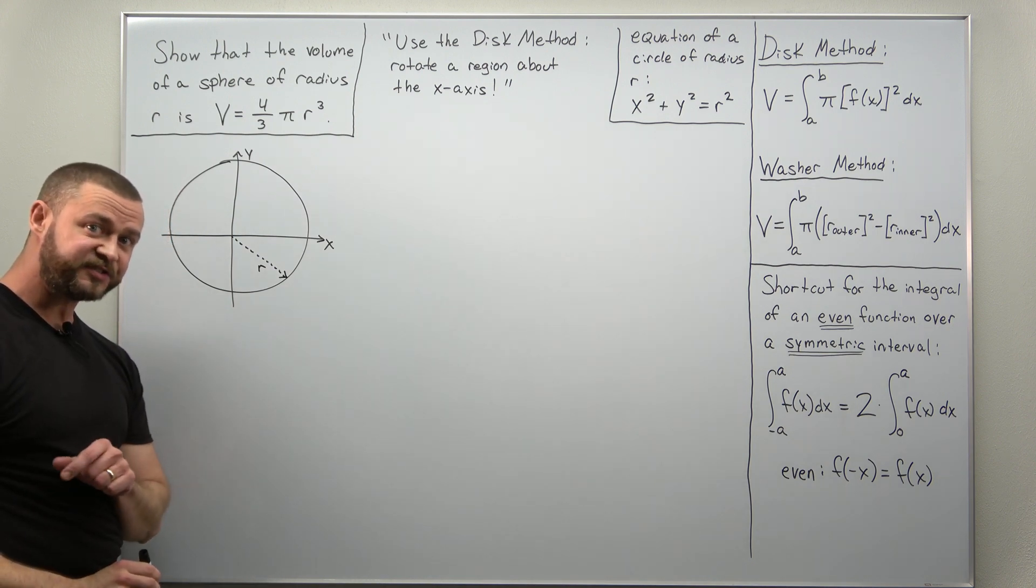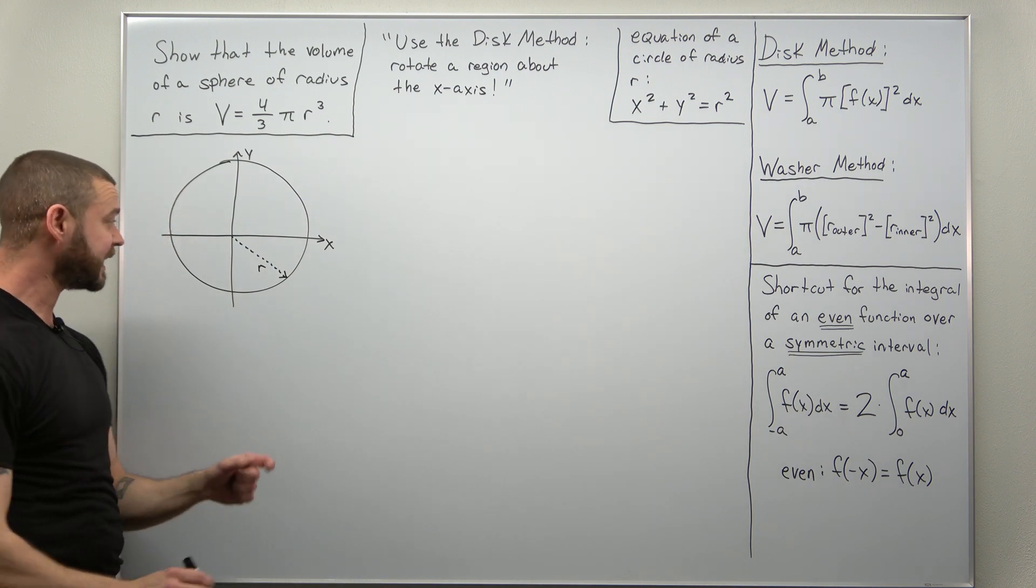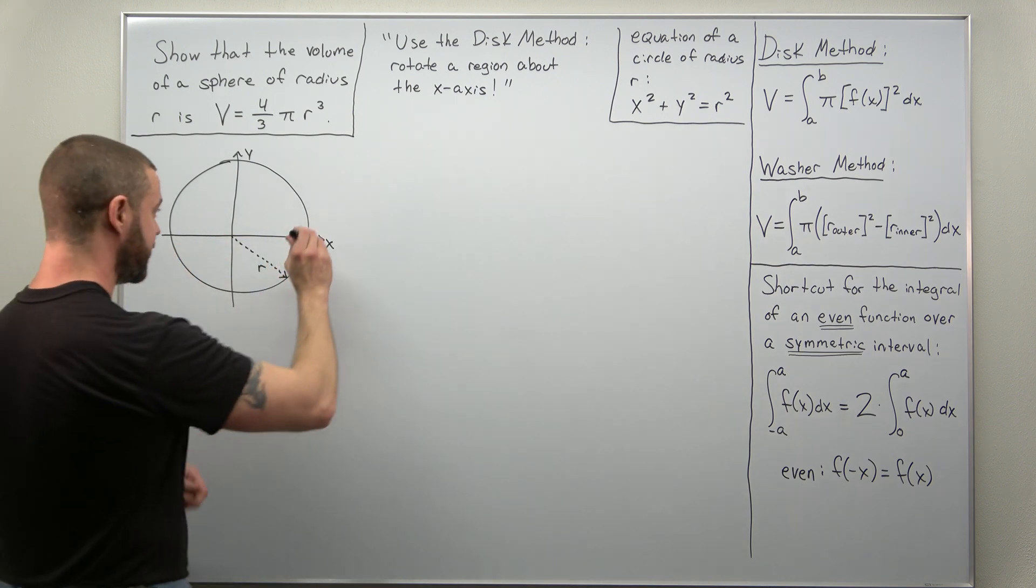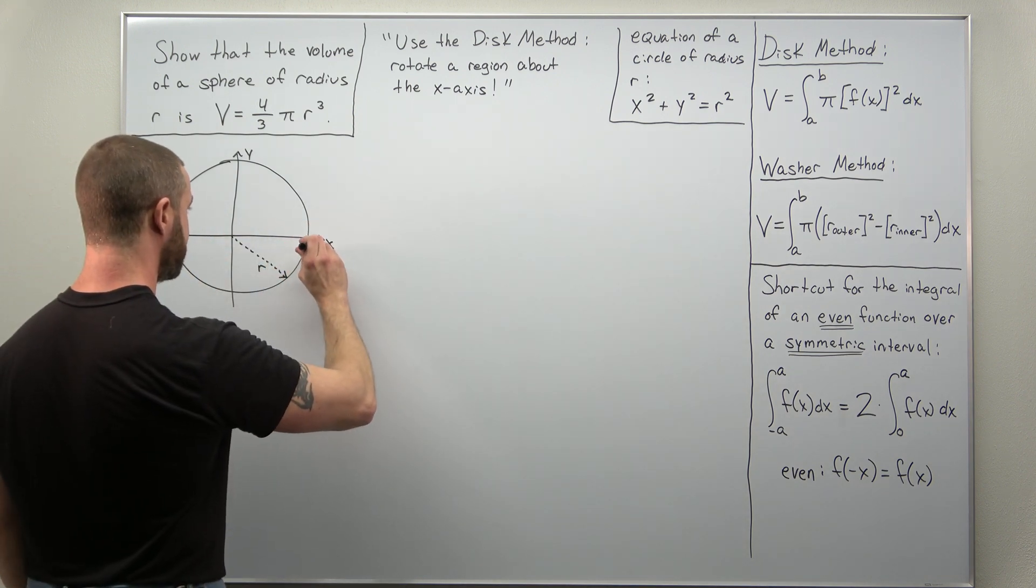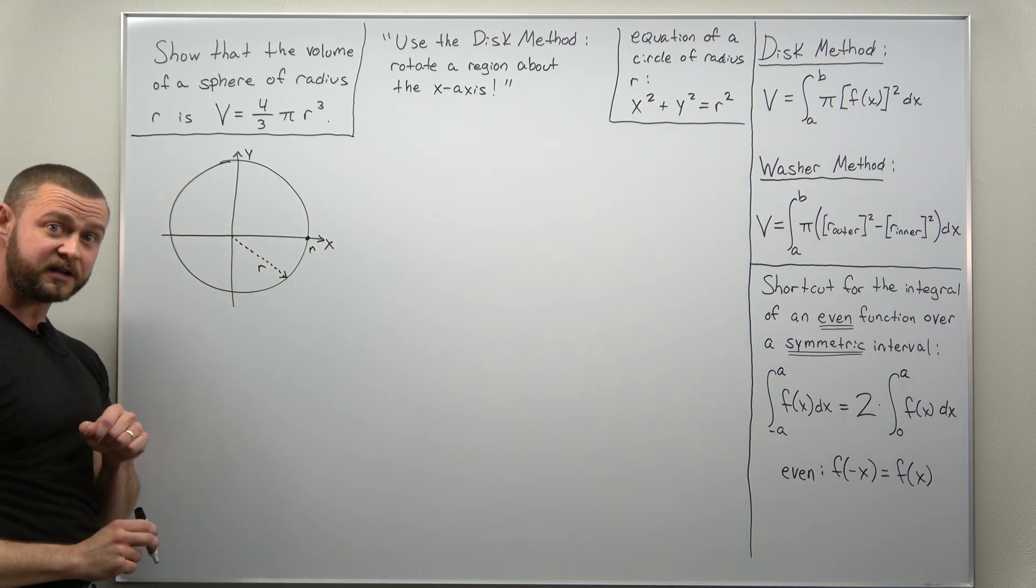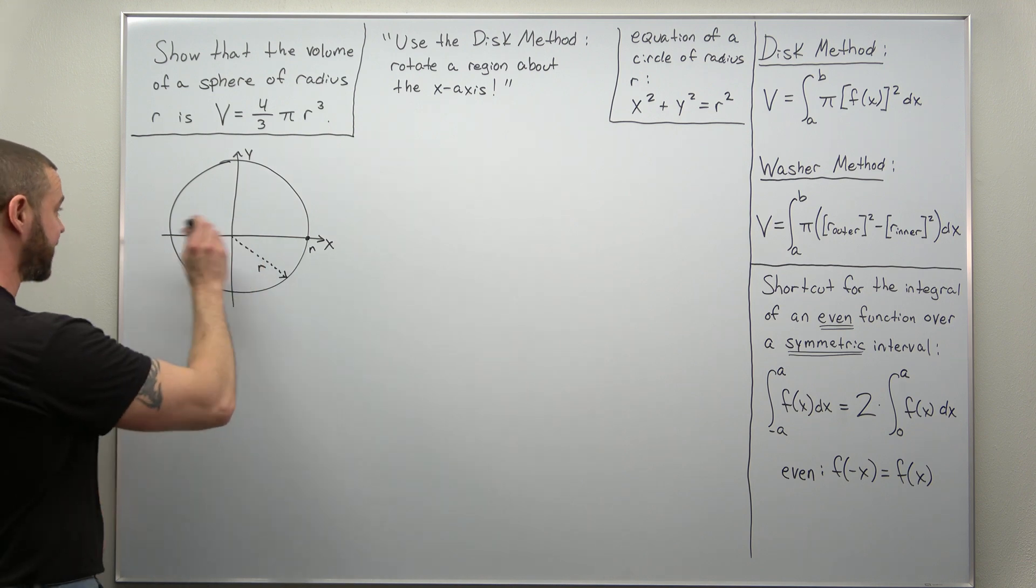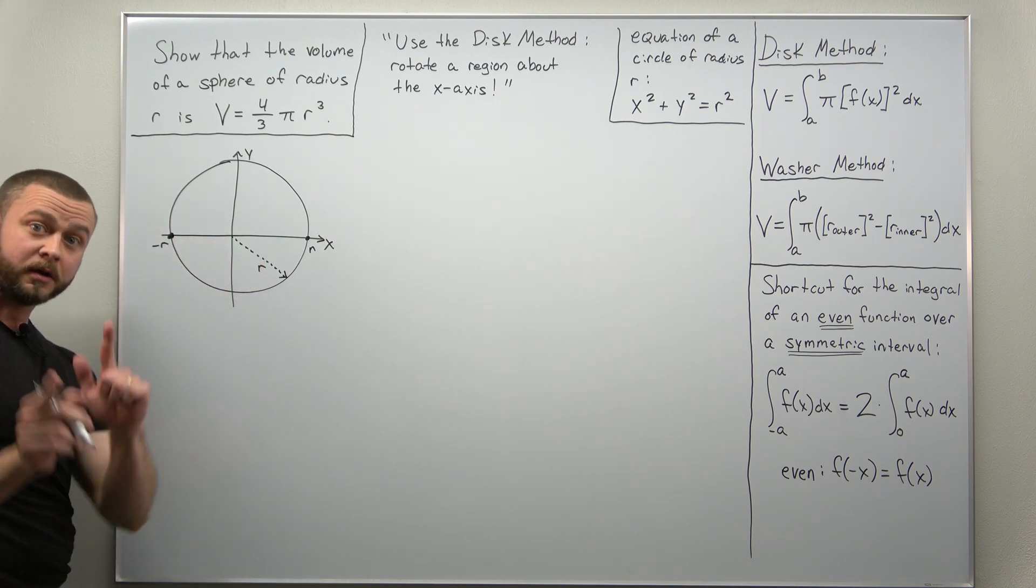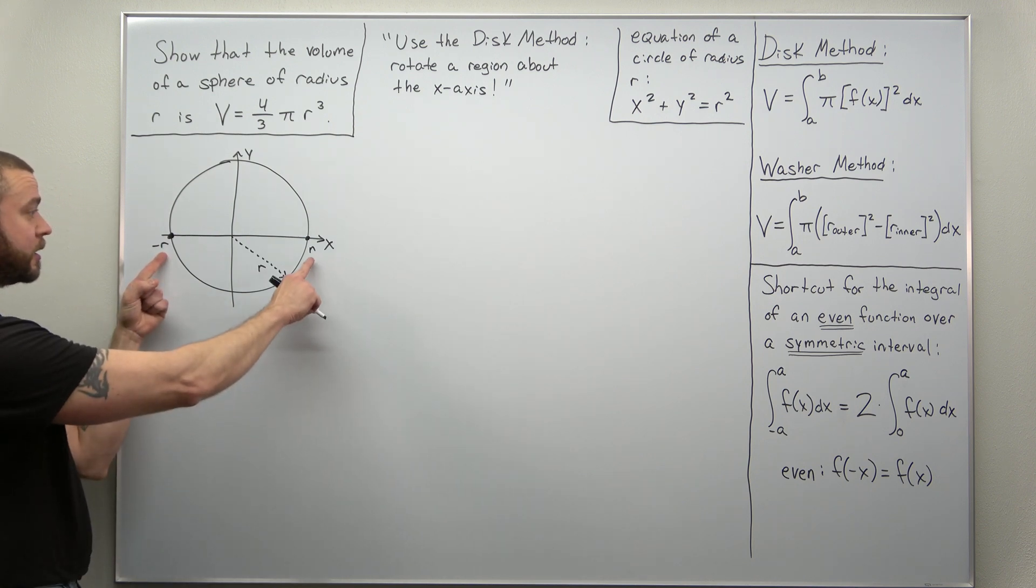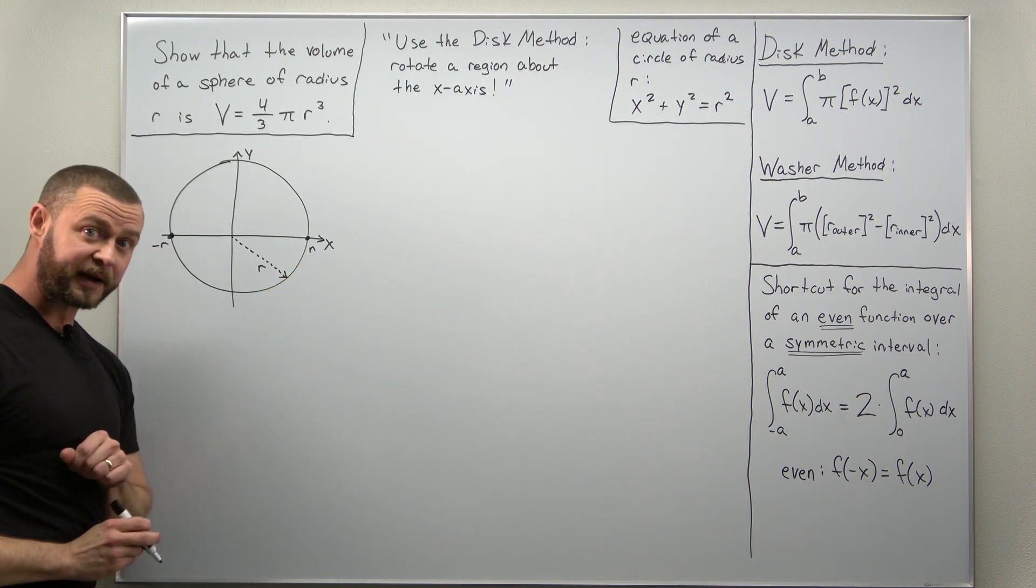All right, now eventually we're going to set this up as an integral with respect to x from the center to the edge, that distance is the radius giving you here the x coordinate positive r. This distance is also the radius but it's along the negative x-axis so this coordinate is negative r. Eventually we're going to have an integral set up from negative r to r integrating with respect to x.